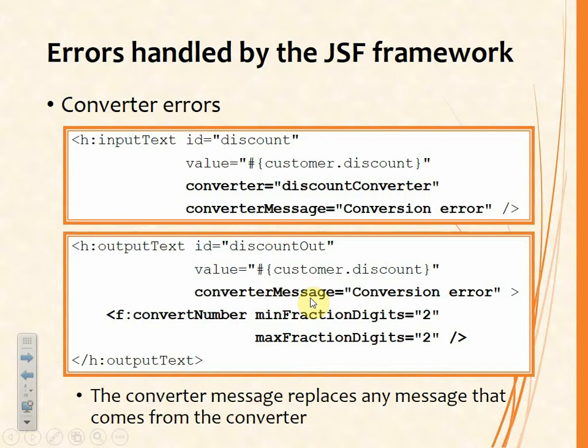A couple of ways of converting: we could either use the converter attribute or we can use a converter tag. Either way there needs to be a converter message so that we don't have some kind of standard and unhelpful message given to the user expressing not even the developer's viewpoint, but some kind of internal view from the framework.